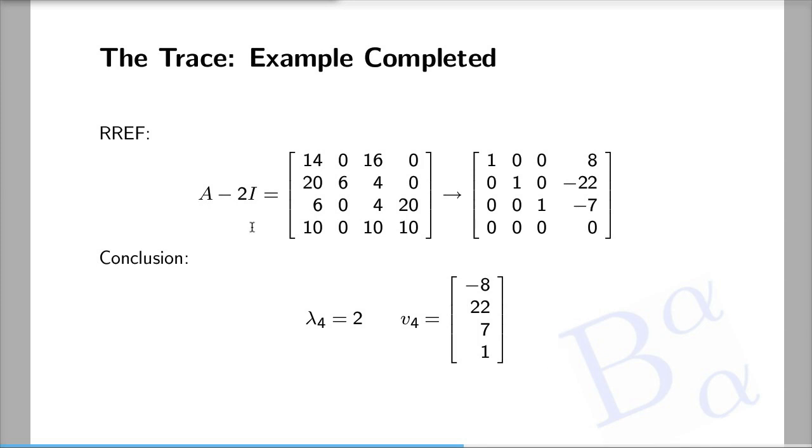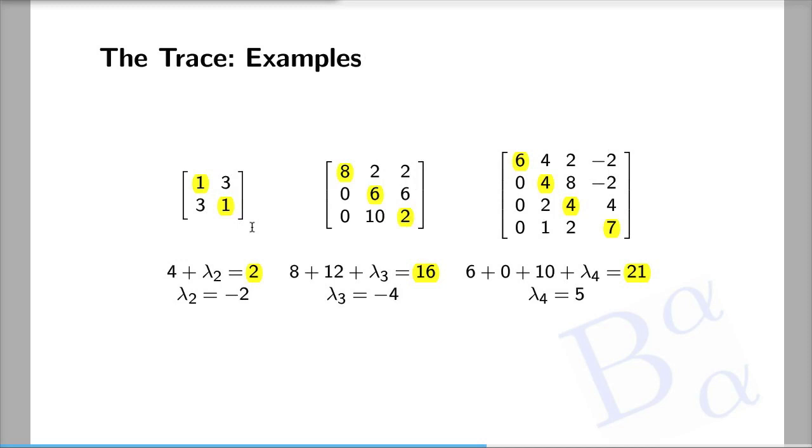Let's consider a few more examples. This is now becoming really fun because we have a number of tools at our disposal to determine the eigenvalues and sometimes the corresponding eigenvectors. For example, in the first two-by-two matrix, one of the eigenvalues is four because each row adds up to four, the corresponding eigenvector being (1, 1). Therefore, from the trace feature, the remaining eigenvalue is minus two.